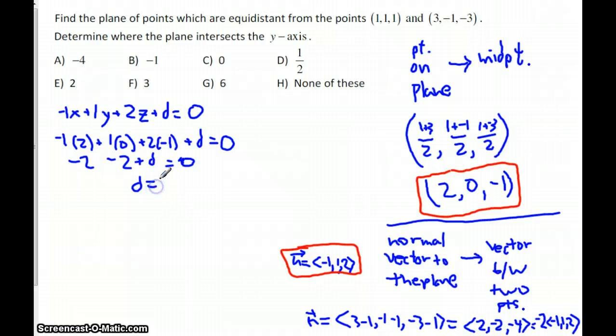So, d is 4. Alright, good. So, we have our equation for our plane, and then we can answer the question finally at the end. We have, the equation is negative x, plus y, plus 2z, plus 4, equals to 0.